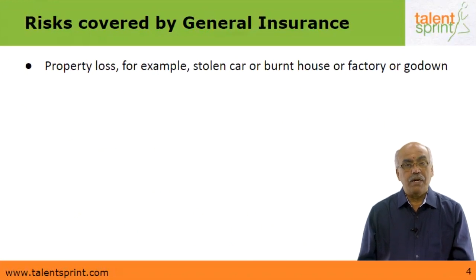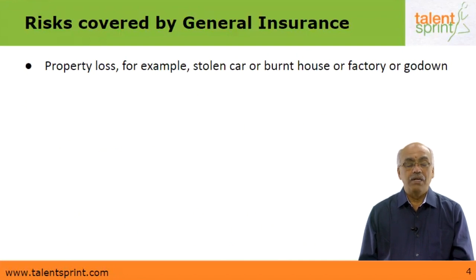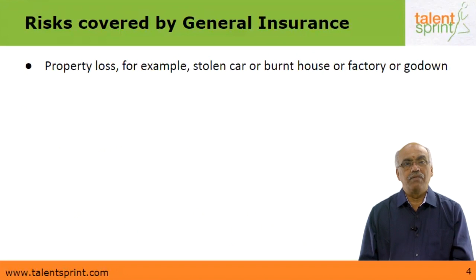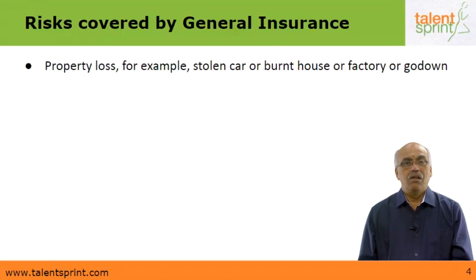The risks covered by general insurance are many. For example, property loss — a stolen car, a burnt house, a factory or a godown. A car damaged in an accident is covered by general insurance, whereas if the person driving the car has died, that is covered by life insurance. The loss arising out of damage to the car is covered by general insurance.